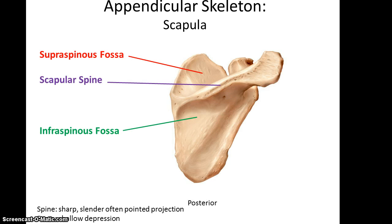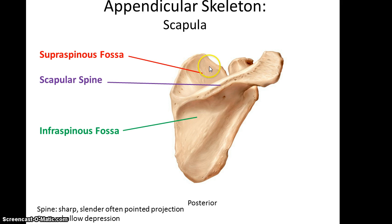If you look at the posterior view of the scapula, you see that you have a long scapular spine sticking out. Above that is the supraspinous fossa, and below it is the infraspinous fossa.